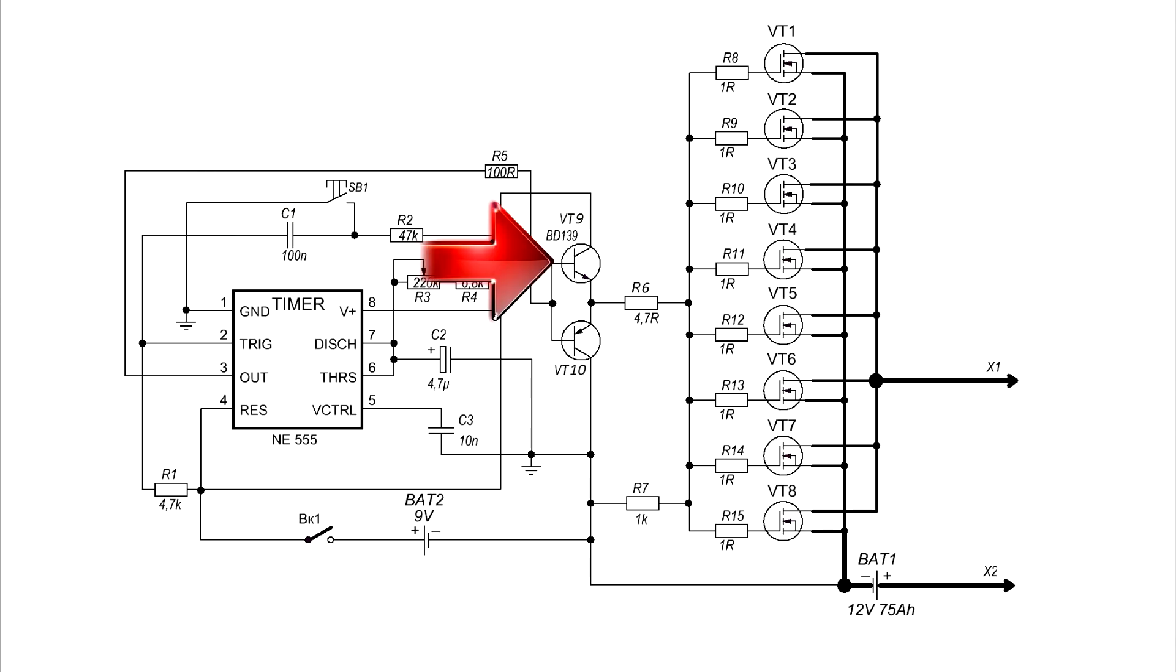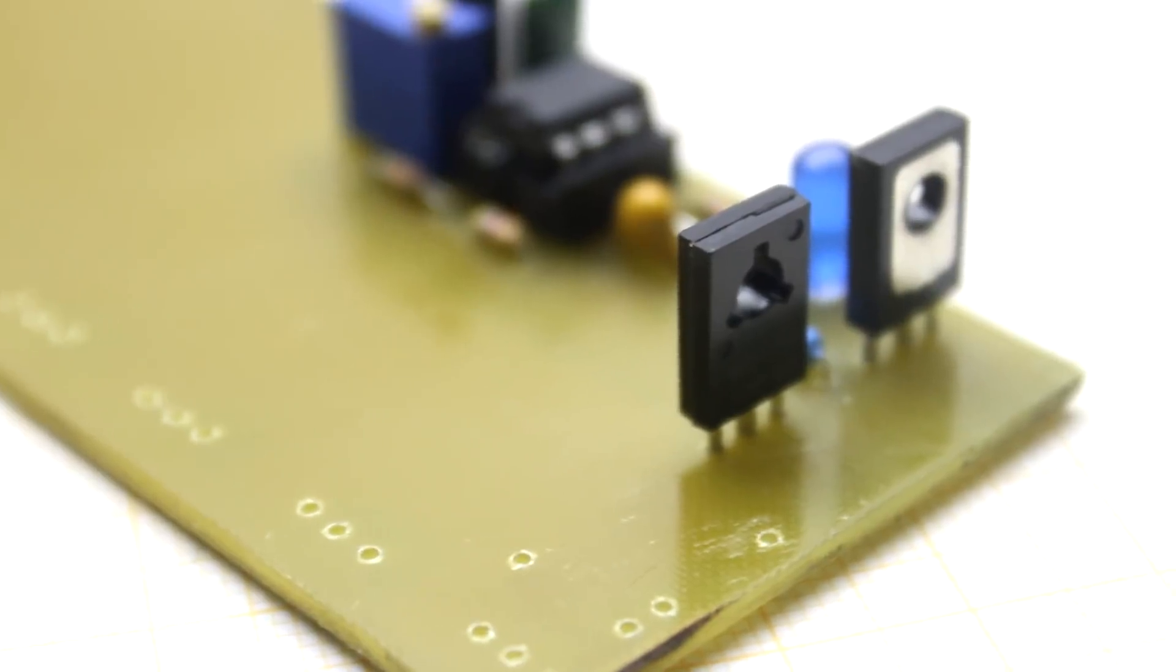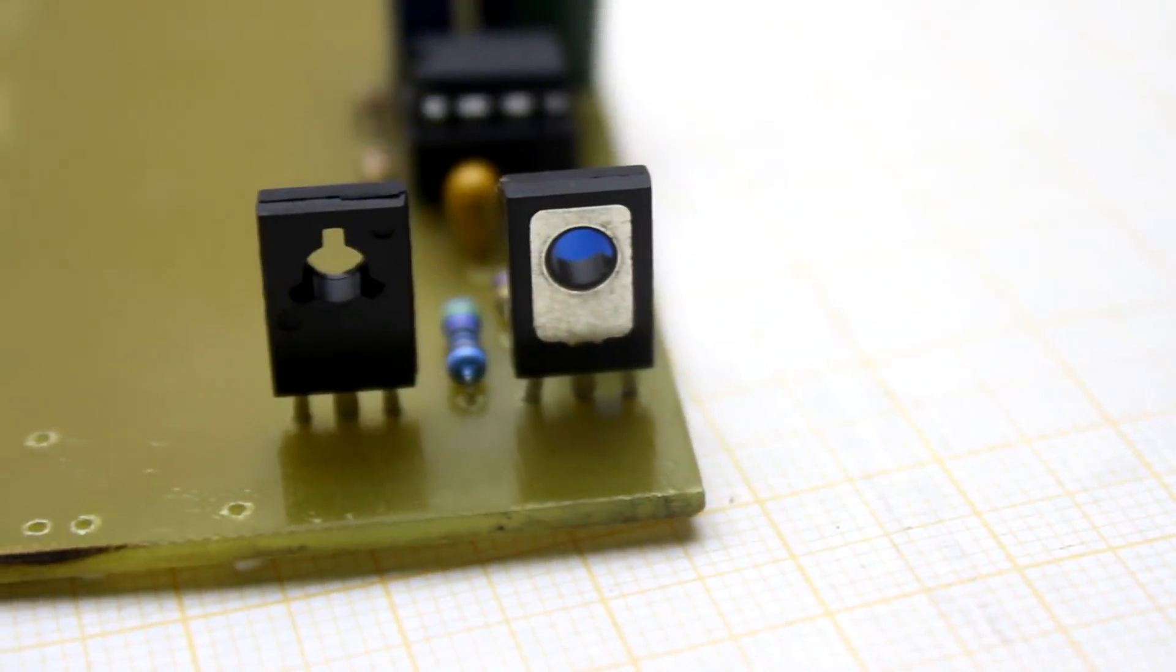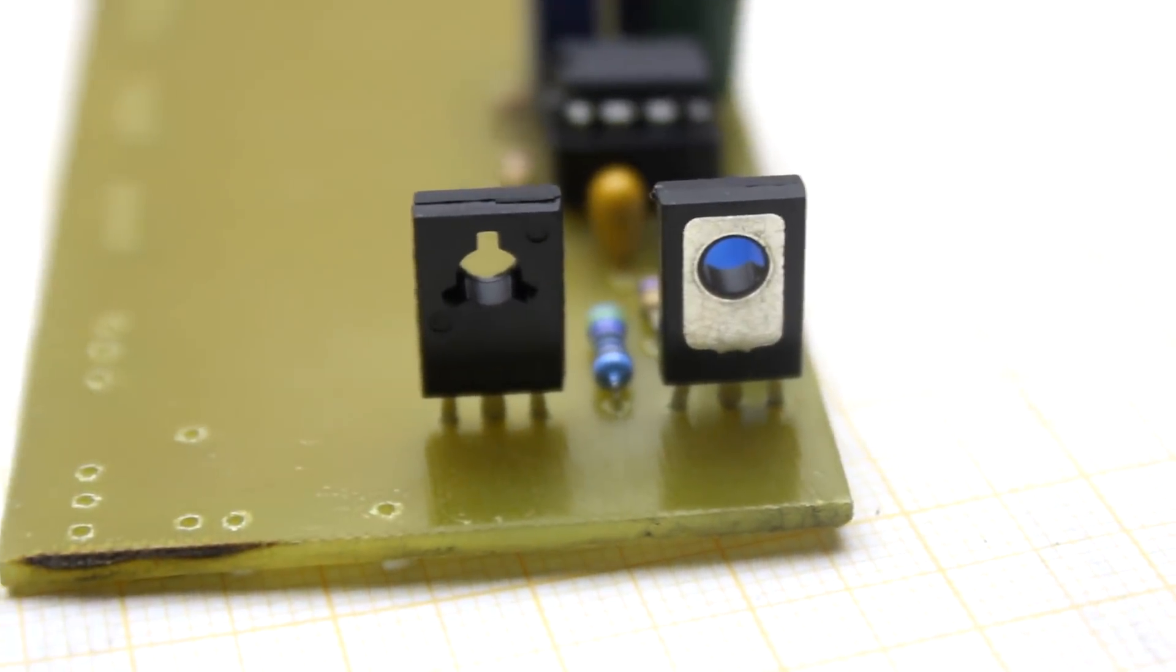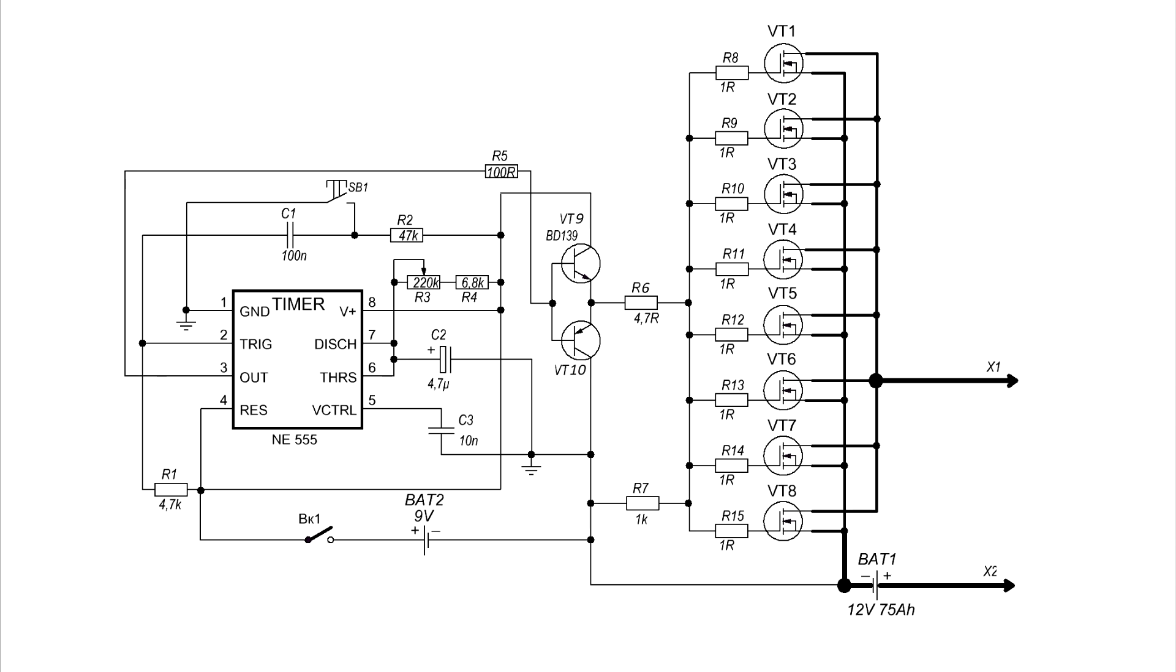On the transistors VT9 and VT10 is assembled a complementary emitter repeater. Its function is to amplify the output signal from the microcircuit. In fact it is the amplifier of the current. I will not explain how works the emitter repeater. There are a lot of articles about working of transistors. In fact here working only the upper transistor.